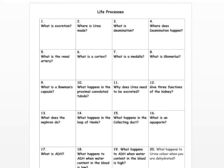Question number two: where is urea made? Liver. Question number three: what is deamination? It is the process through which an amine group is removed from a protein, so it will basically result in that removal. Where does deamination happen? Question four: in the liver.